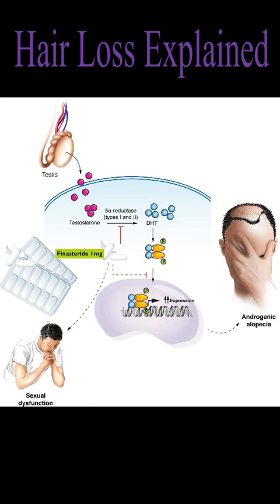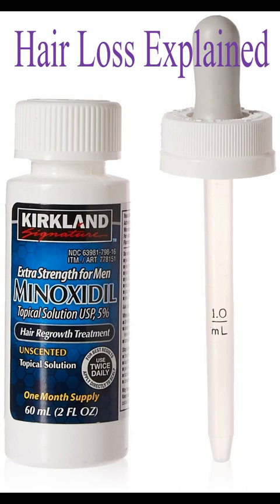The first medicine to be used is minoxidil. It does reduce DHT, but it works indirectly — it's not a direct inhibitor of DHT. This medicine you apply to your head. It was initially a blood pressure control medicine, but people taking it for blood pressure had good hair growth results. That's why it was introduced for topical use on the scalp — you apply it twice a day.